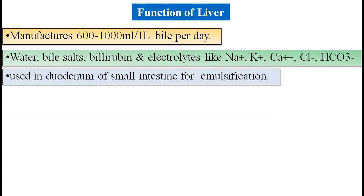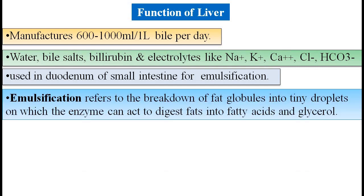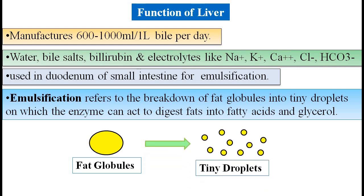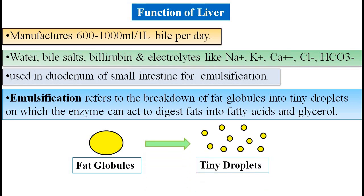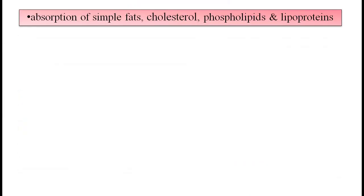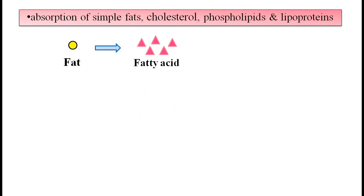Bile is used in the duodenum of the small intestine for emulsification. Emulsification refers to the breakdown of fat globules into tiny droplets so that enzymes can digest these tiny droplets into fatty acids and glycerols. Bile helps to emulsify fats, which are later digested by enzymes. Bile also helps in the absorption of simple fats, cholesterol, phospholipids, and lipoproteins.